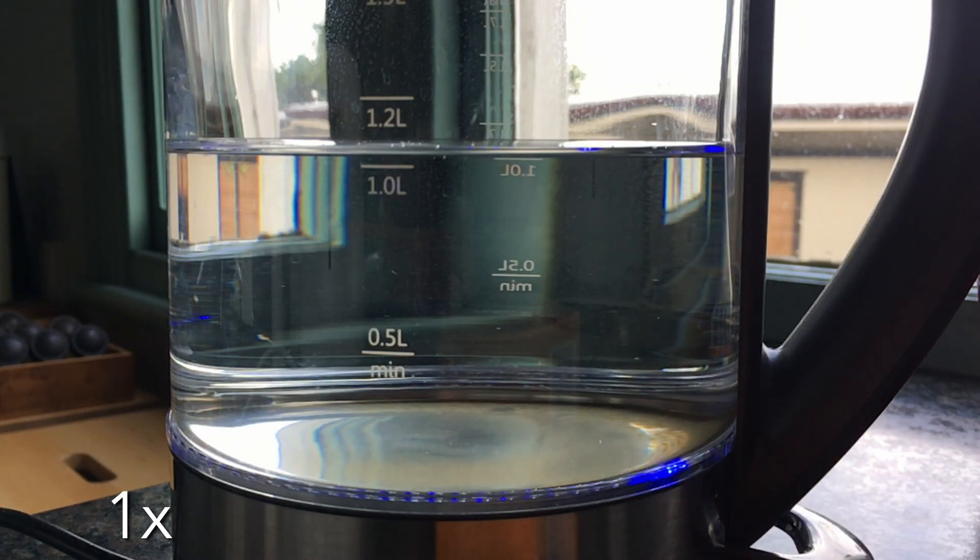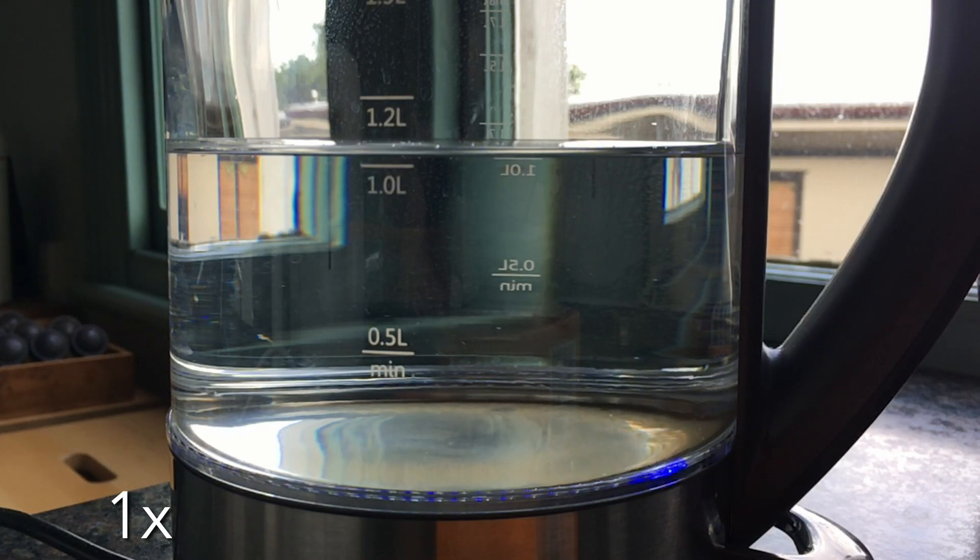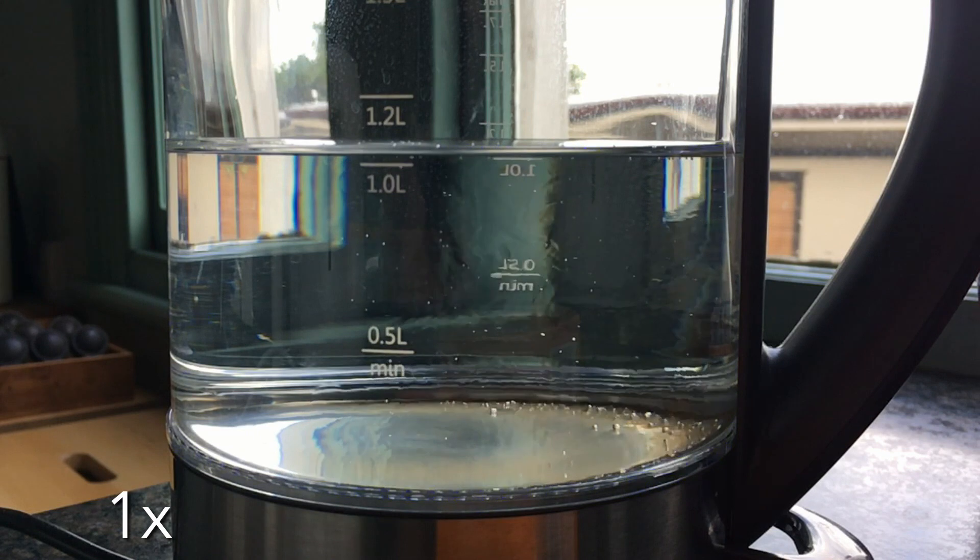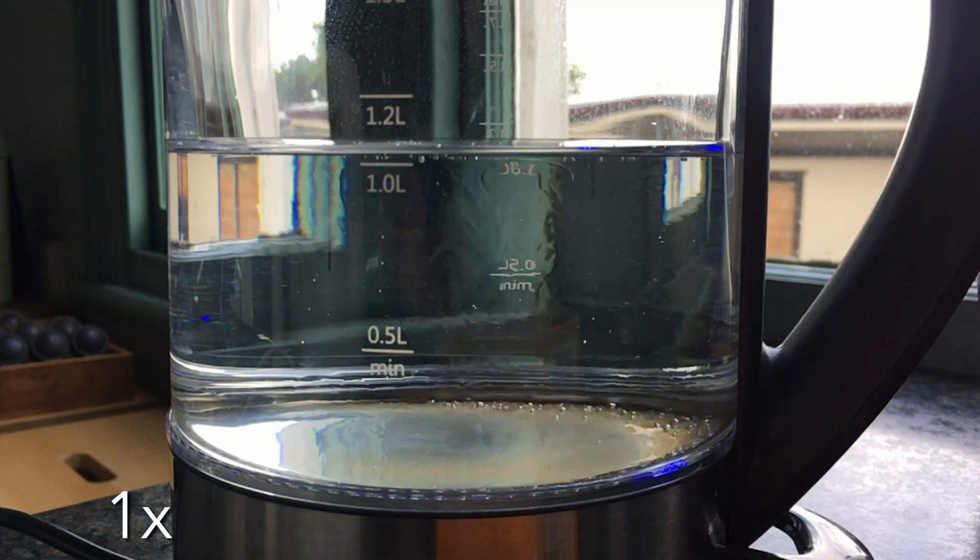As electricity passes through the element in the bottom of the jug, it heats up. Simple enough. That heat is transferred to the water inside the jug. The water that's right next to the element heats up a lot, and at 100 degrees Celsius, it starts to boil.